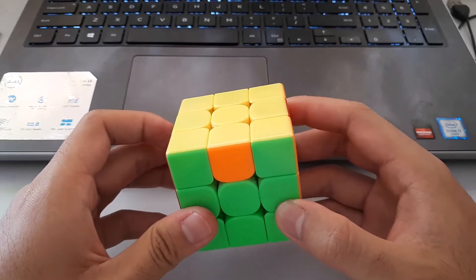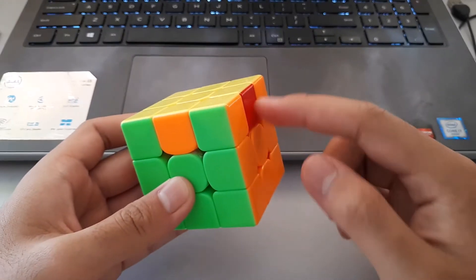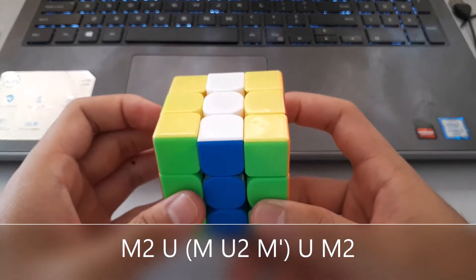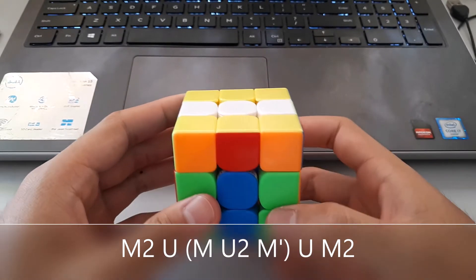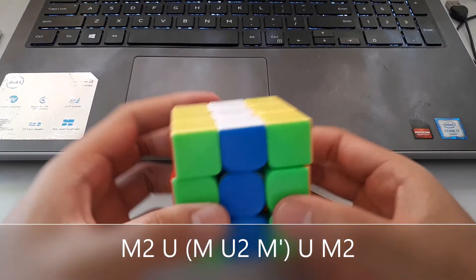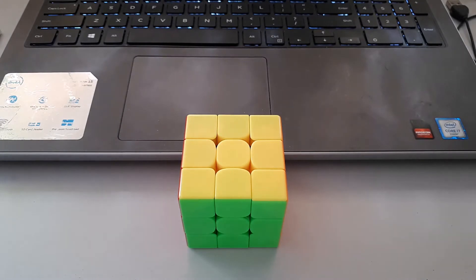And these algorithms are actually quite easy to memorize as well. So how I recognize it is basically just looking at opposite colors. So we have opposite colors here. So the algorithm starts off with an M2, and we bring the one with the opposite colors into the middle. Do an M-U2-M' and then match the colors up. So it's a fairly simple algorithm and pretty fast as well.